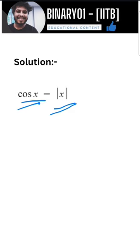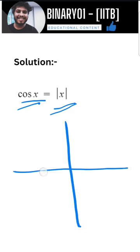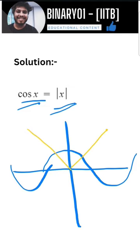The number of intersections will determine the number of solutions. So, how does cos x look? On a rough scale, I will draw it. So, cos x is this way. And then, the |x| is this way.